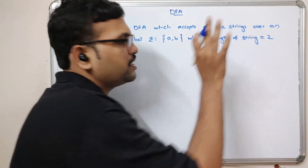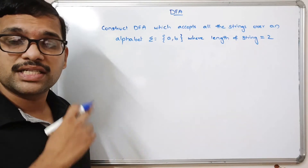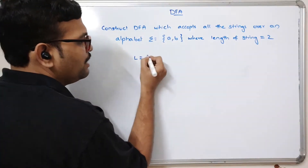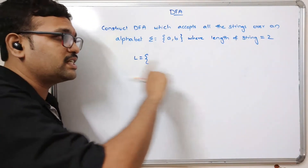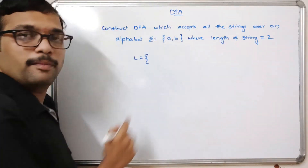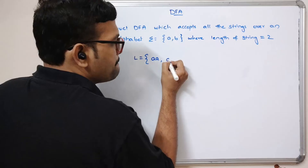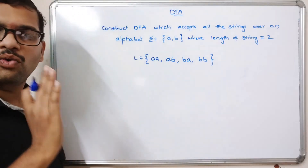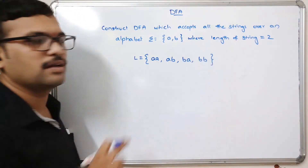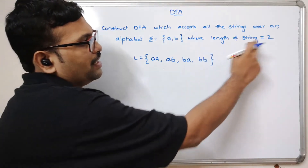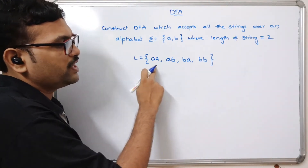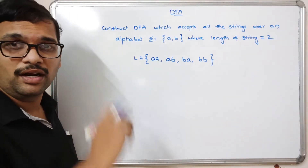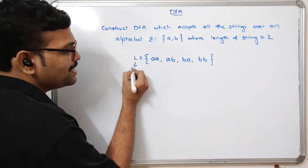We need to construct the DFA whose accepted strings must have length exactly two. The language consists of strings of length two over {a, b}: aa, ab, ba, bb — only four strings are accepted for this problem.